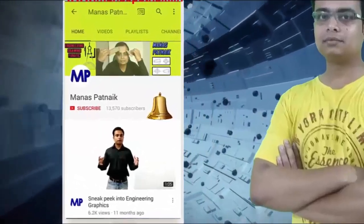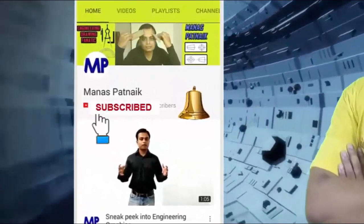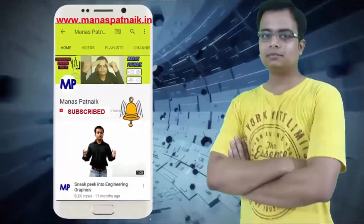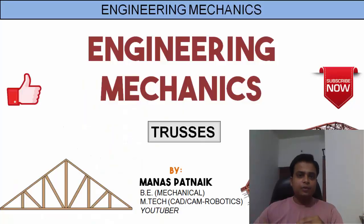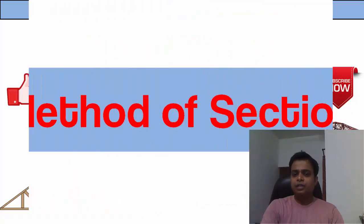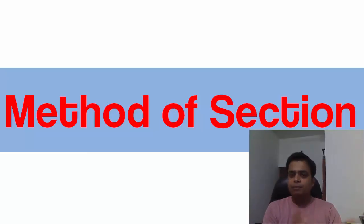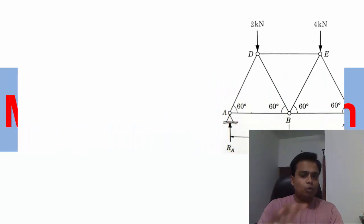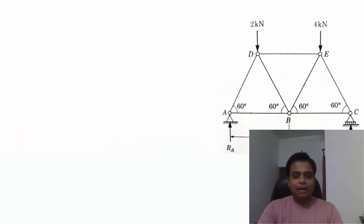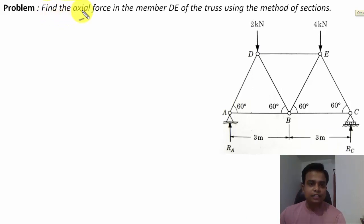Want to learn engineering and science? You've tuned in to the right channel — hit subscribe and press the bell icon. Hi there guys, this is your friend and tutor Manas, and in today's tutorial we're going to be talking about a very special method: Method of Sections. With this method you can actually find the axial force in any particular member of a given truss. So let's take up an example — find the axial force in member DE of the truss using Method of Sections. Now guys, this is going to be Tip Number One.